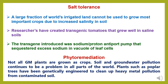Salt tolerance through genetic engineering. A large fraction of the world's irrigated land cannot be used to grow most important crops due to increased salinity in soil. Researchers have created transgenic tomatoes that grow well in saline soils. There are transgenes introduced that can remove excess sodium in plant cells through vacuoles. Phytoremediation is another application. Soil and groundwater pollution continues to be a problem worldwide. Plants such as poplar trees have been genetically engineered to clean up heavy metal pollution from contaminated soils.